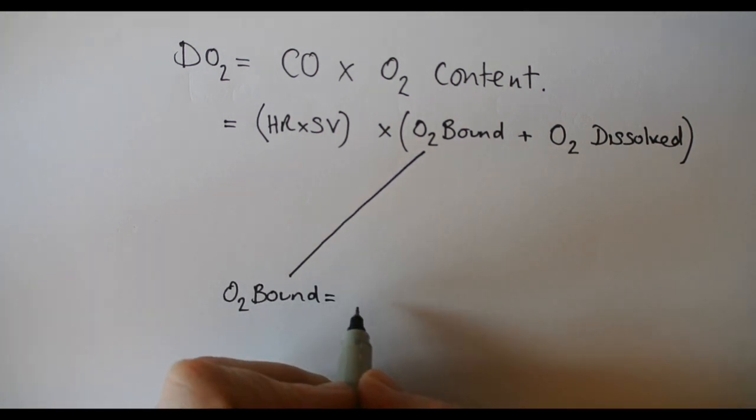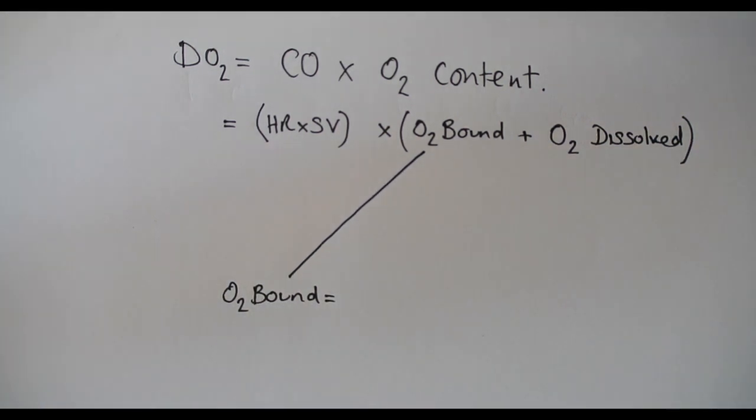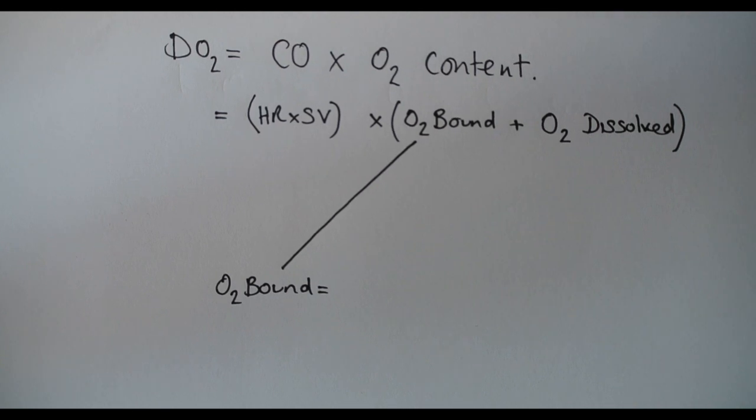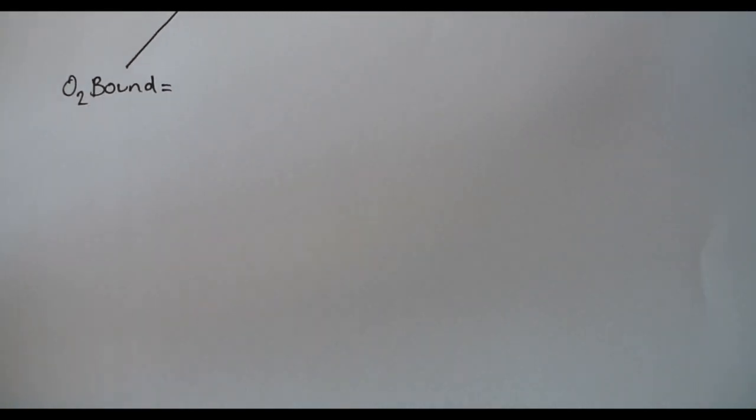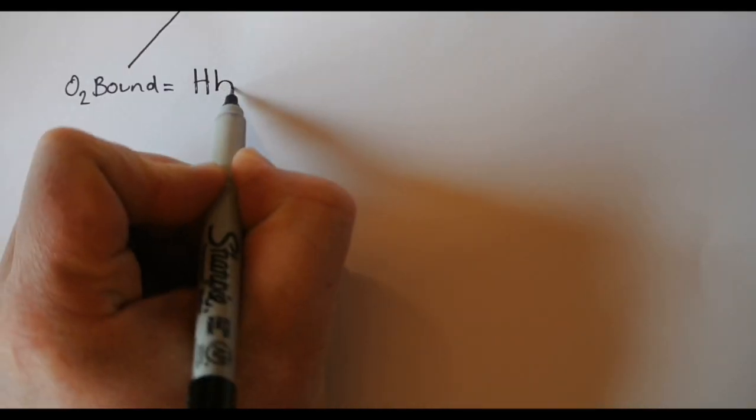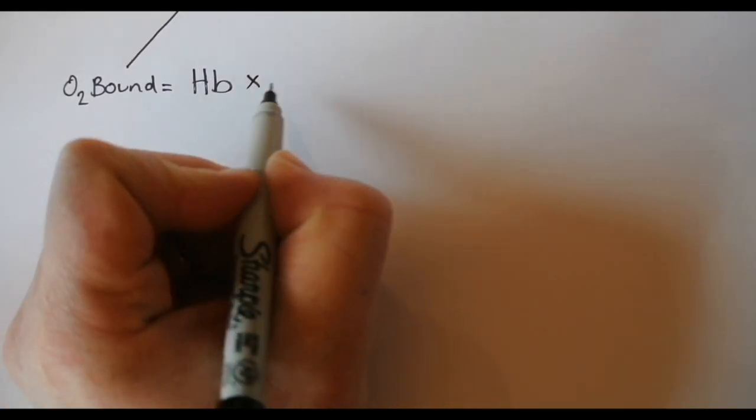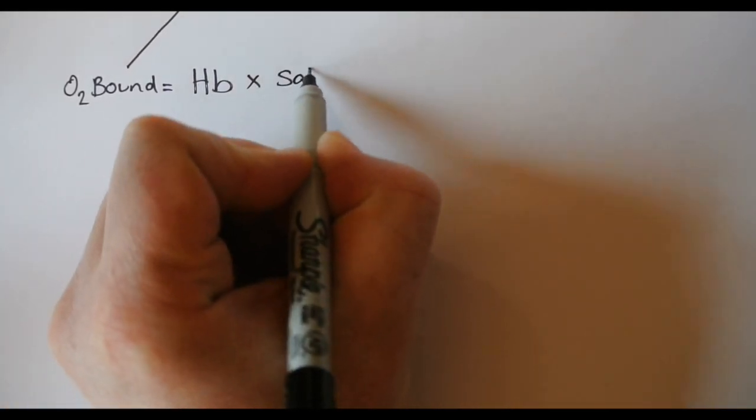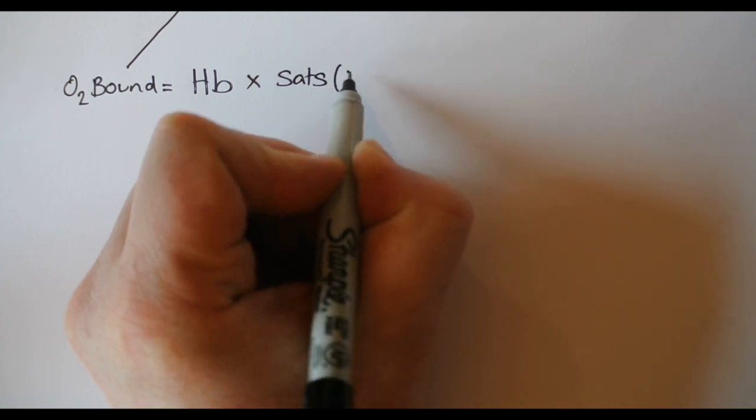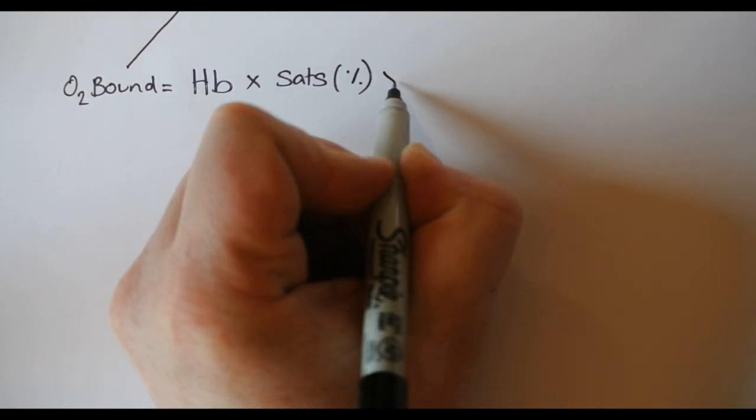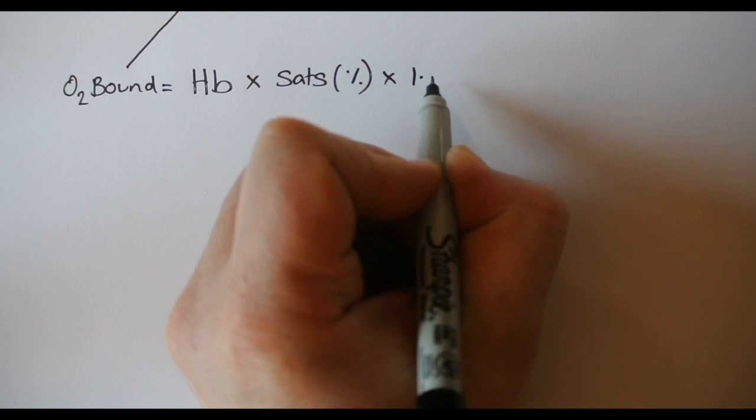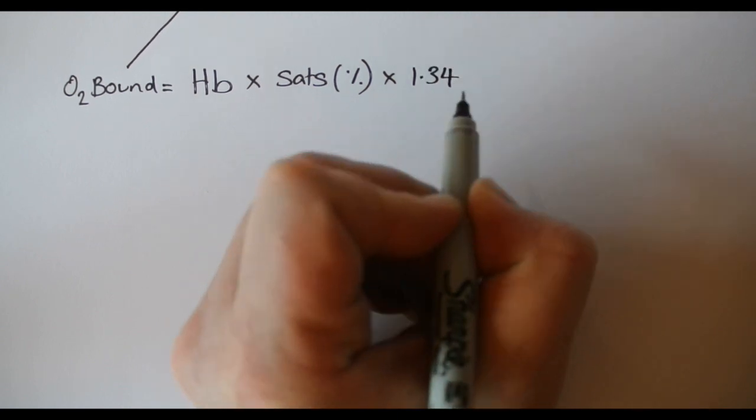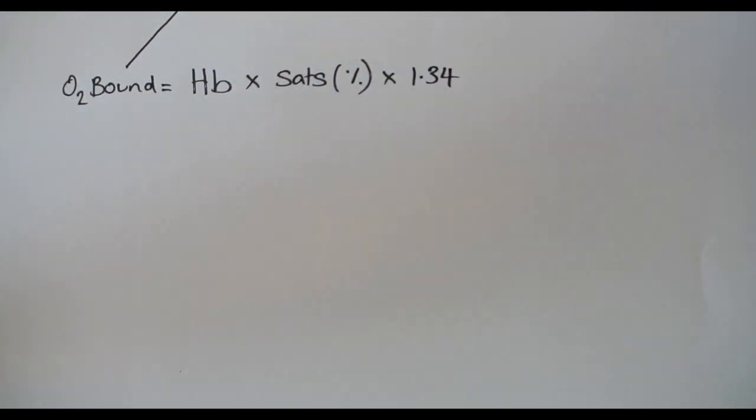If we look a bit more closely at the O2 bound, this is oxygen that's bound to your hemoglobin in the blood. If we break it down to its component parts, we need to look at the hemoglobin concentration, we need to know the saturations, the percentage of the hemoglobin that is fully saturated, and then we have a number called Hüfner's constant which is a theoretical value of how much oxygen can be carried per milliliter of blood.